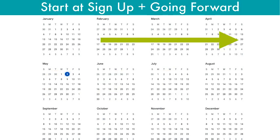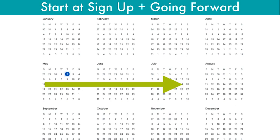Another option is the start at signup plus going forward model. Again, let's say a client signs up in February — they'll start receiving content as you publish it for February, and as long as they stay on they'll keep getting upcoming content each month: February's, March's, and April's content. But they would not get January's content because they were not a member then. Similarly, if somebody signs up in May, they're not going to get content from February, March, and April because they just joined in May.